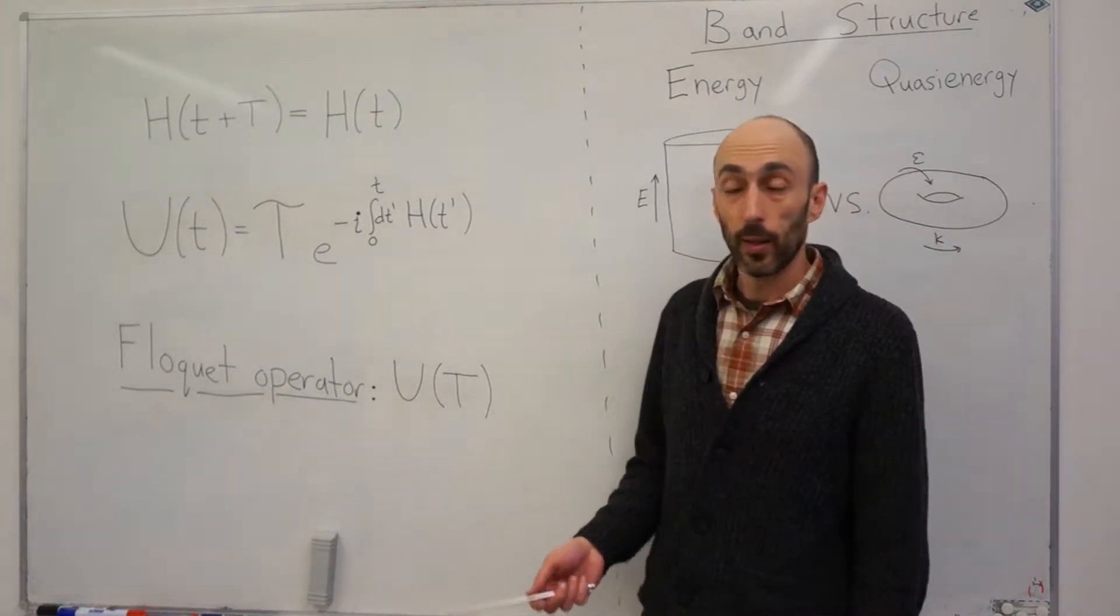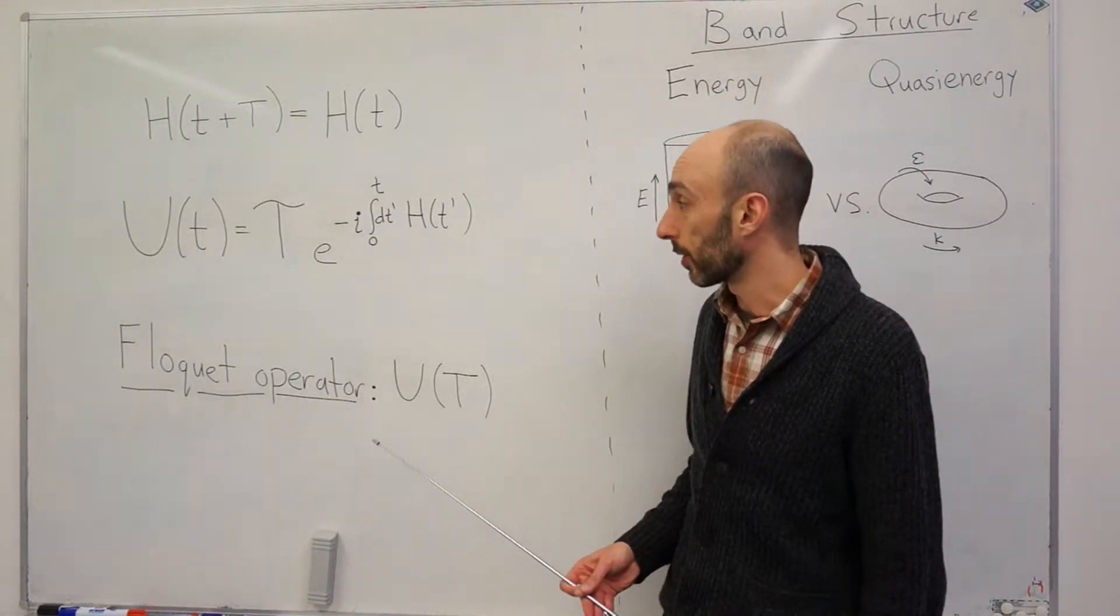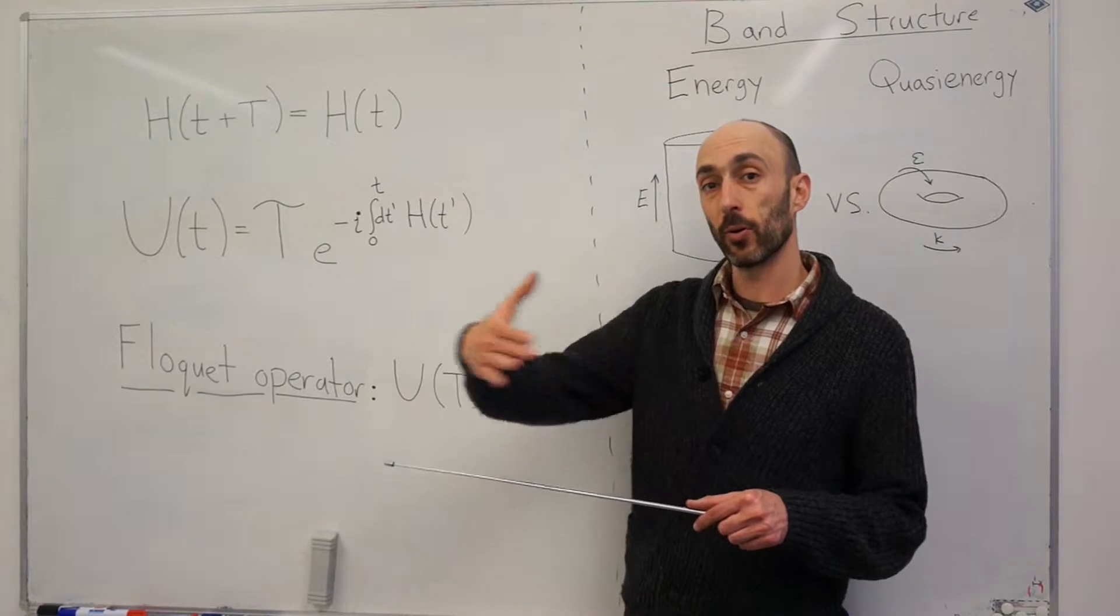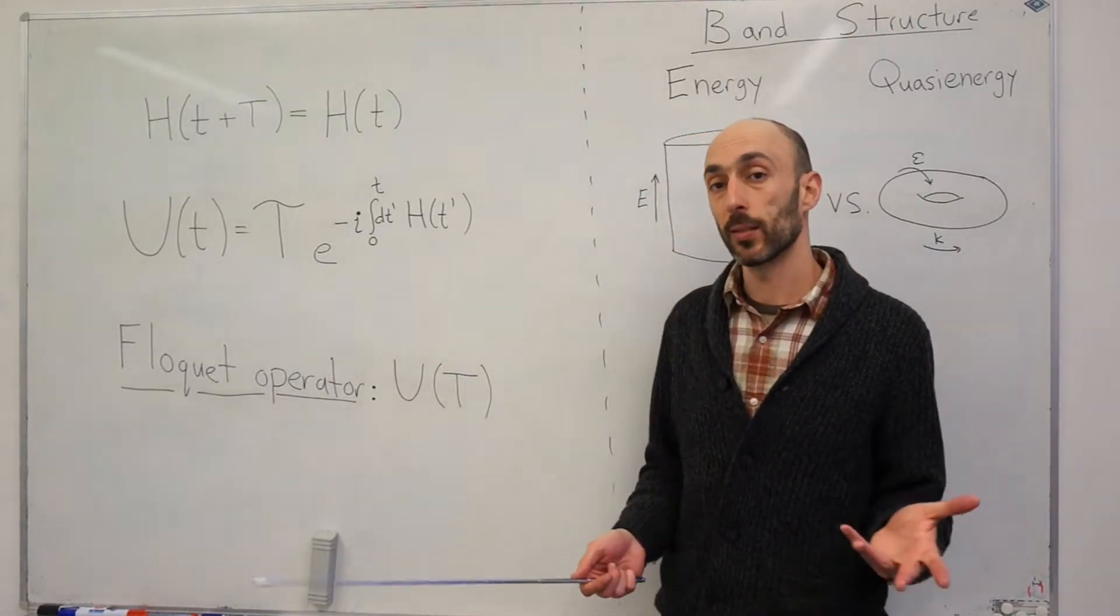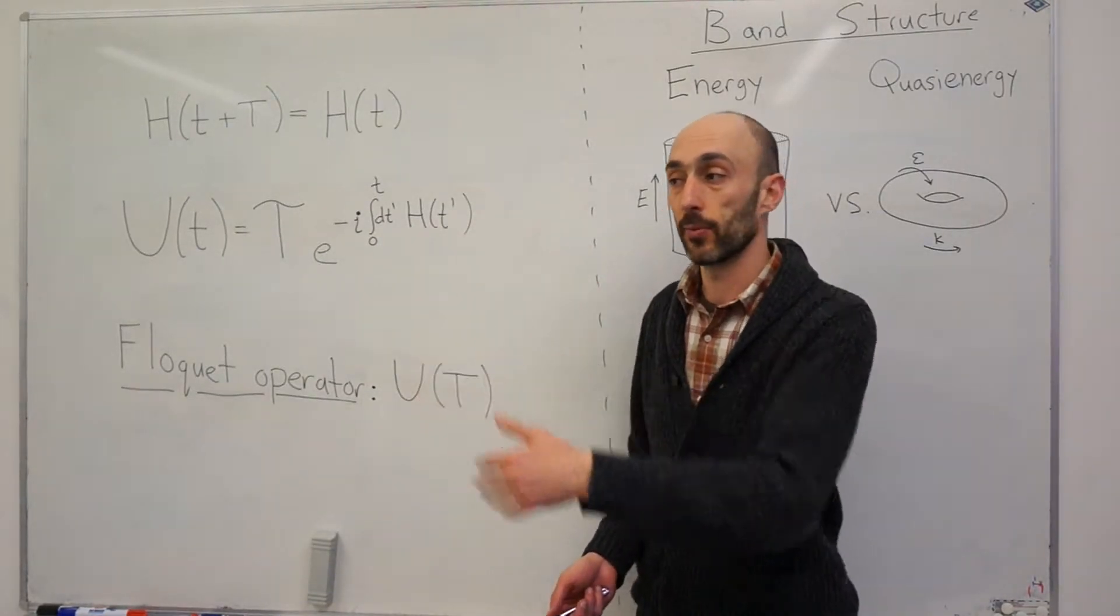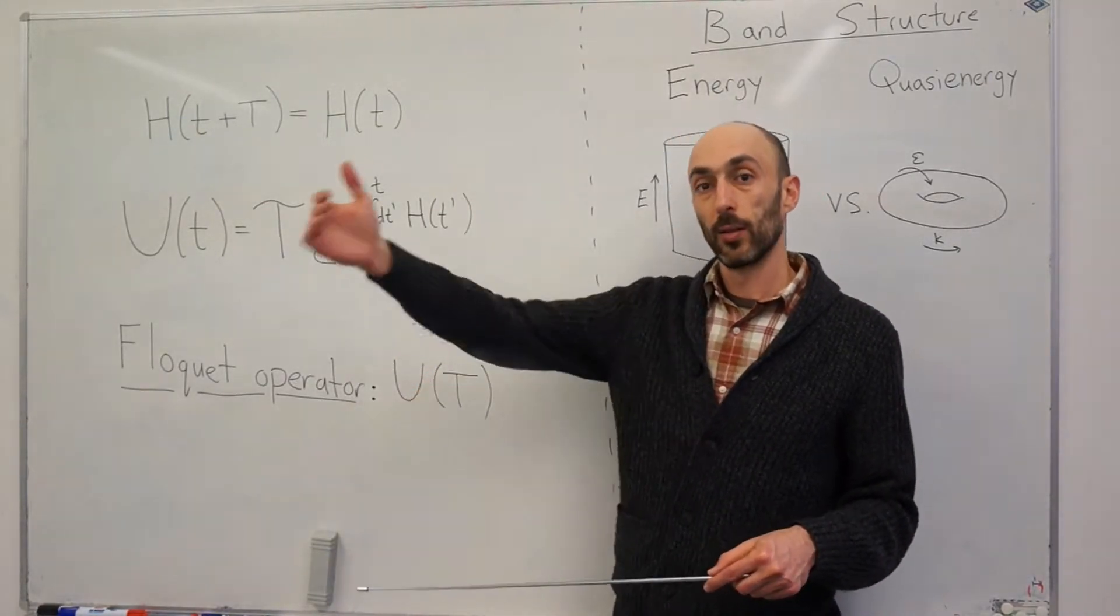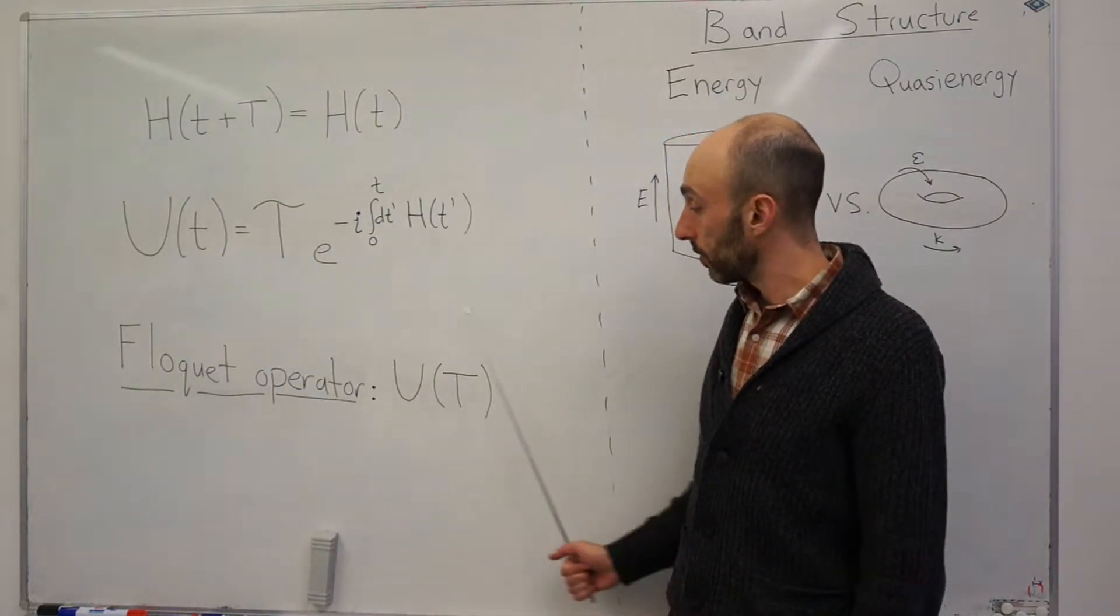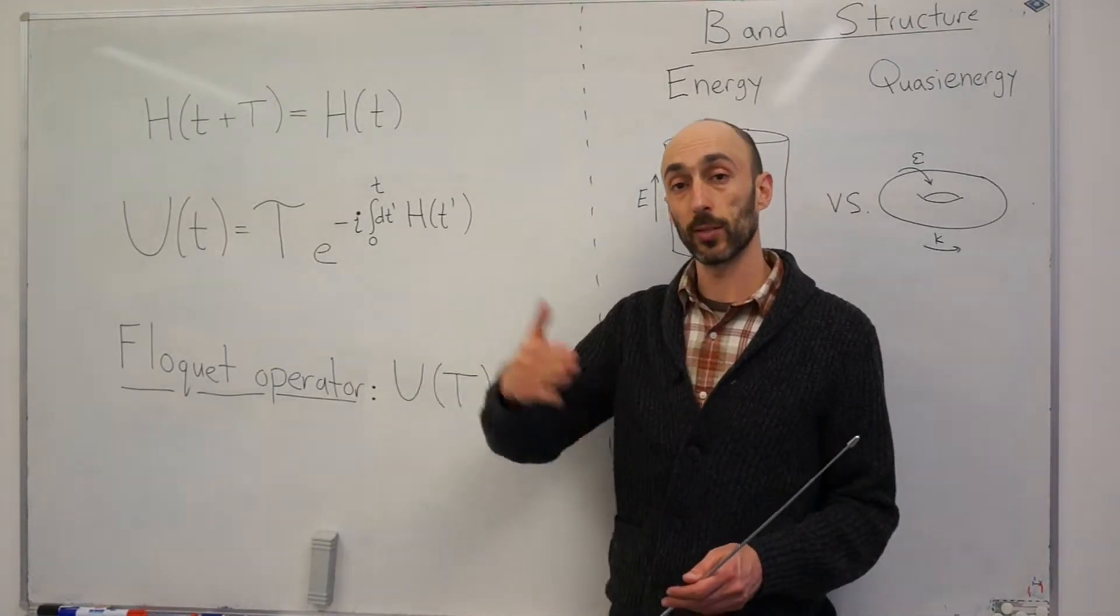So, where do we go? Well, for the specific case of periodic driving, there's a very useful operator called the Floquet operator, which is the time evolution operator that propagates the system forward in time through one complete driving period, capital T. Why is this thing useful? Well, if I imagine some kind of stroboscopic or discrete time evolution, where I only look at the state of the system, say at time 0, capital T, 2 times capital T, and so forth, then I apply this same unitary operator over and over again to move the system forward through these discrete time steps.